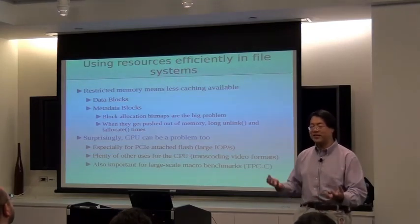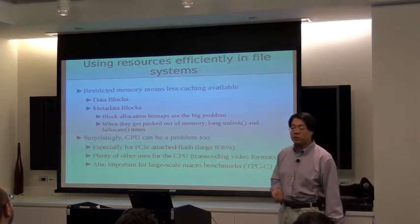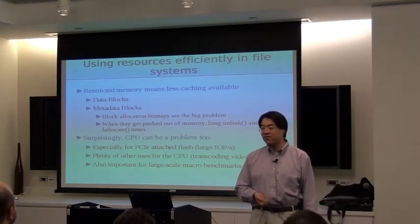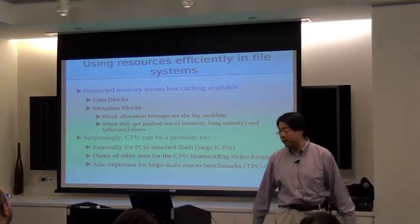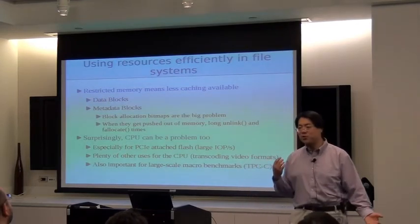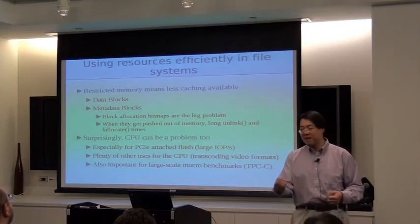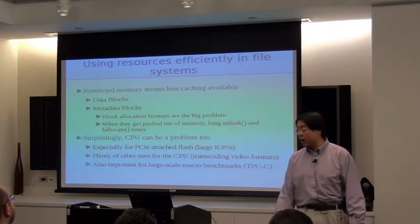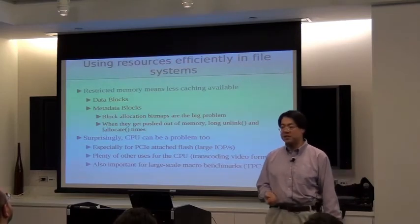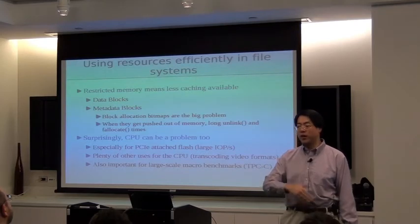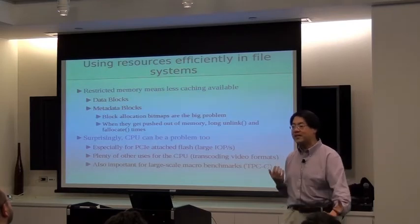These are things you only discover when you benchmark in a tight memory situation. CPU can be a problem too, especially if you're using super-fast flash — you can now do lots of IOPS and will often end up CPU-bound. You might also have other uses for the CPU: running VM jobs, transcoding video, or large-scale database benchmarks like TPC-C, which are very CPU sensitive as well as storage sensitive.